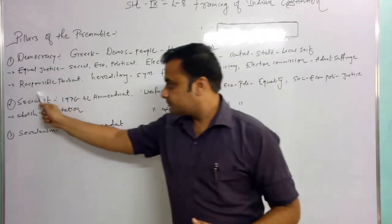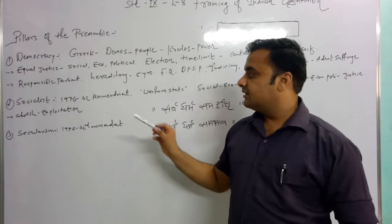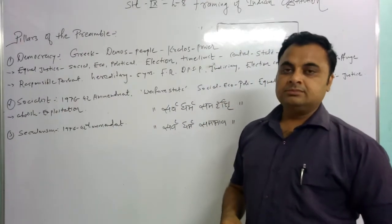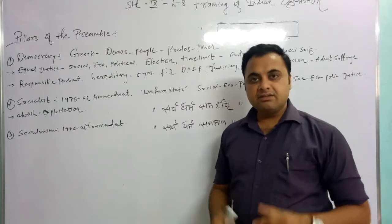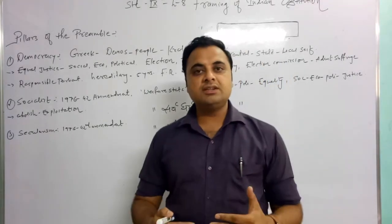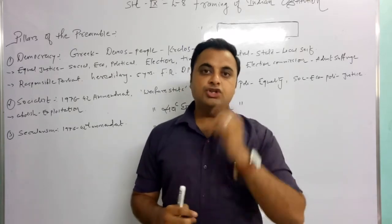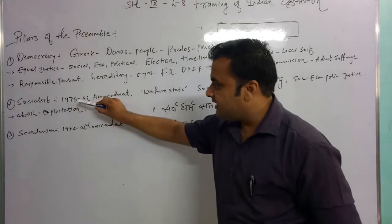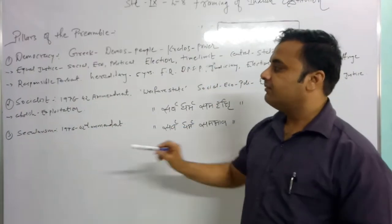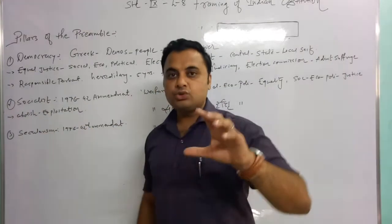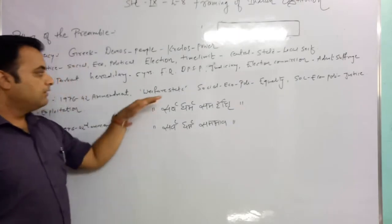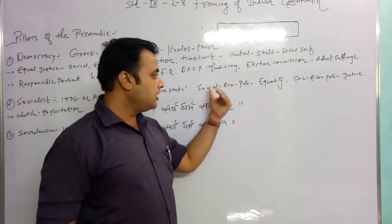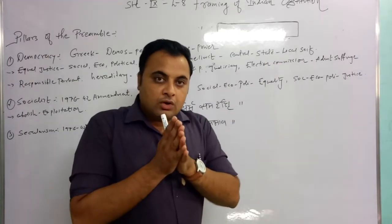The second pillar of the preamble is socialist. In the last video I explained the amendment process - there are more than hundreds of amendments in our constitution. Amendment means to change an article or process in the constitution. Through the 42nd amendment of 1976, the word socialist was added to the preamble, and it stands for the welfare of society and making a welfare state.